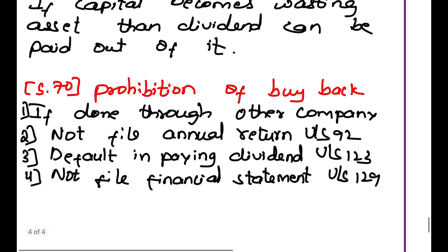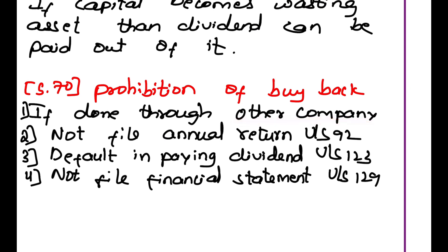Section 70 — Prohibition of Buyback: a company is prohibited from buying back their shares when it is done through another company, when the company has not filed the annual return under Section 92, when there is a default in paying dividend under Section 123, or when the company has not filed financial statements.